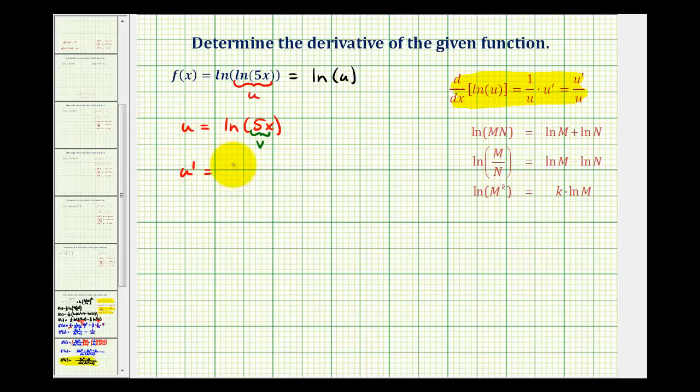So u prime is going to be one over five x times five, or five over one. Notice how the five simplify out, so u prime is equal to one over x, or one divided by x.